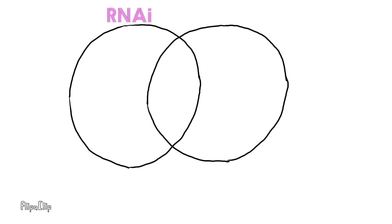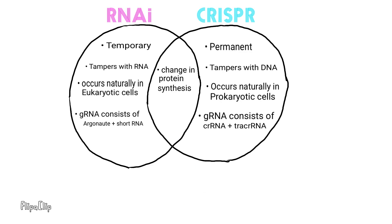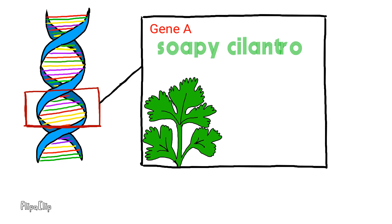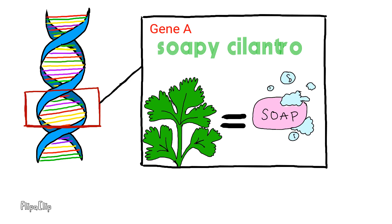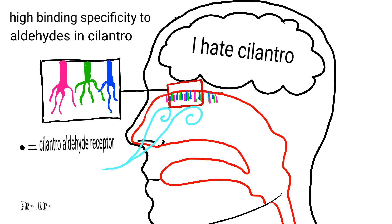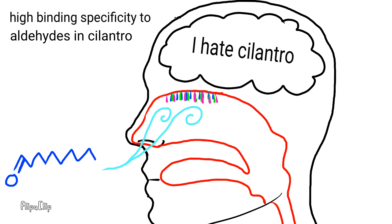Although RNAi and CRISPR technology both affect gene expression, there is a big difference in process and outcome. For example, I'll use the gene that affects the appeal of cilantro. Let's say gene A is the gene that causes cilantro to taste soapy. This gene causes your olfactory nerve to have a high binding specificity to aldehydes that come from cilantro.